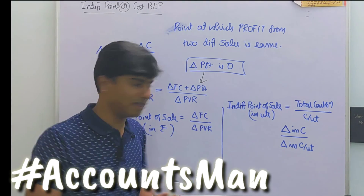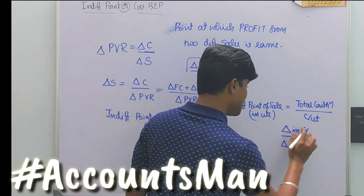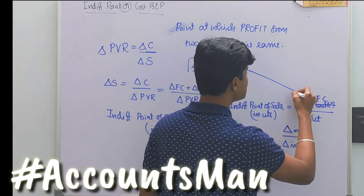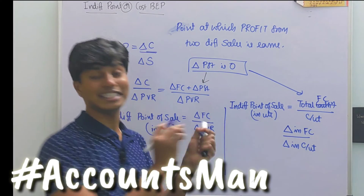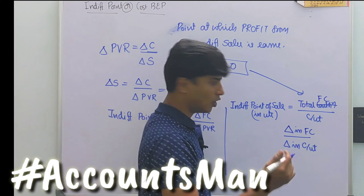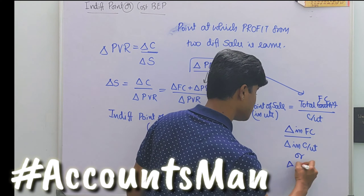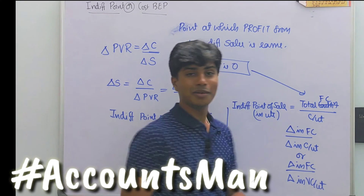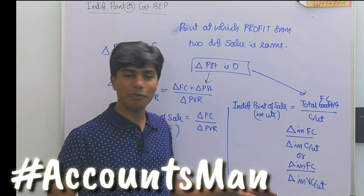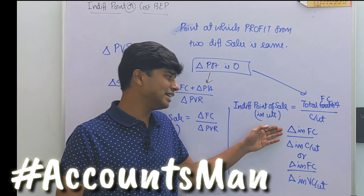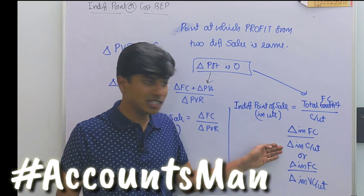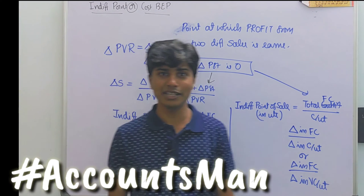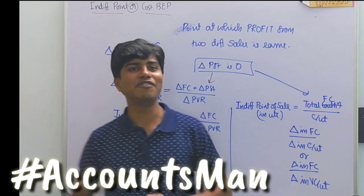So instead of change in contribution, we write change in fixed cost, because the change in profit is zero. Therefore: indifference point of sale in units = change in fixed cost / change in contribution per unit. Alternatively, this can be written as change in fixed cost divided by change in variable cost per unit, since contribution changes exclusively due to variable cost. Either way, the result is the indifference point of sale in units.